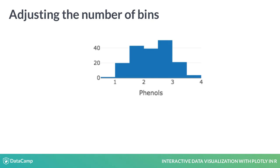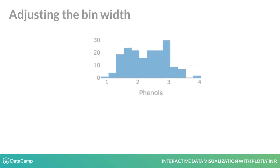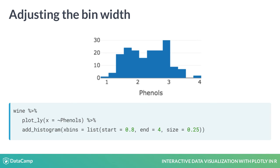Whenever you create a histogram, it's important to explore different binning schemes, since bins that are too wide may mask interesting features of the data, and bins that are too small provide little insight. There are two ways to adjust the binning scheme in Plotly. The first is to change the number of bins displayed by adding the nbinsx argument to the add_histogram command — here we specify that ten bins should be displayed. The second way is to specify the exact values for the bins using xbins equals list, with start equals 0.8, end equals 4, and size equals 0.25, resulting in bins of width 0.25 spanning from 0.8 to 4.